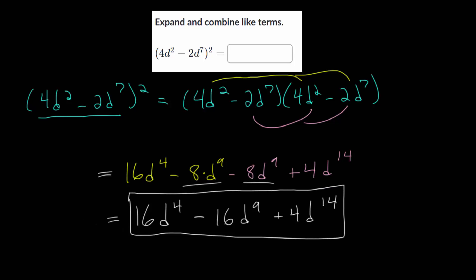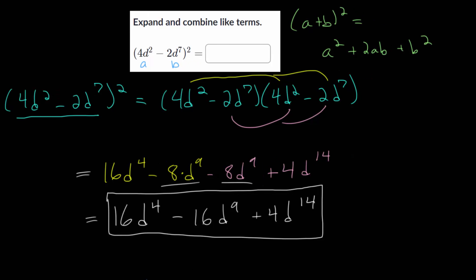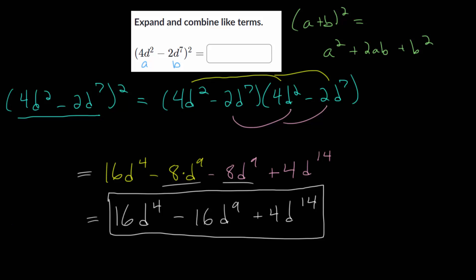The way to check this is to use the formula. Remember, the formula a plus b squared, which we looked at in the intro video, is just a squared plus 2ab plus b squared. We just need to identify what a and b are. So let's quickly do this so that we can feel certain we're doing this correctly. We have a squared — so that's 4d squared, and we're squaring that.